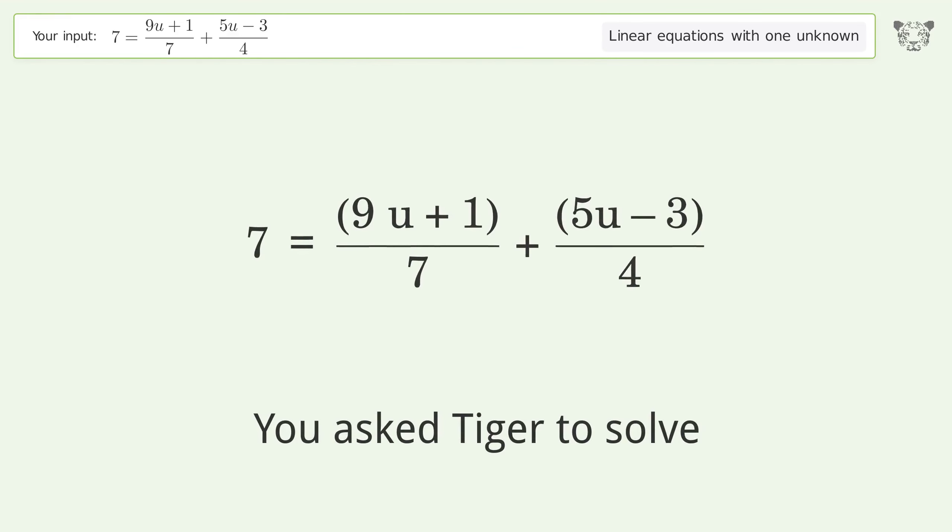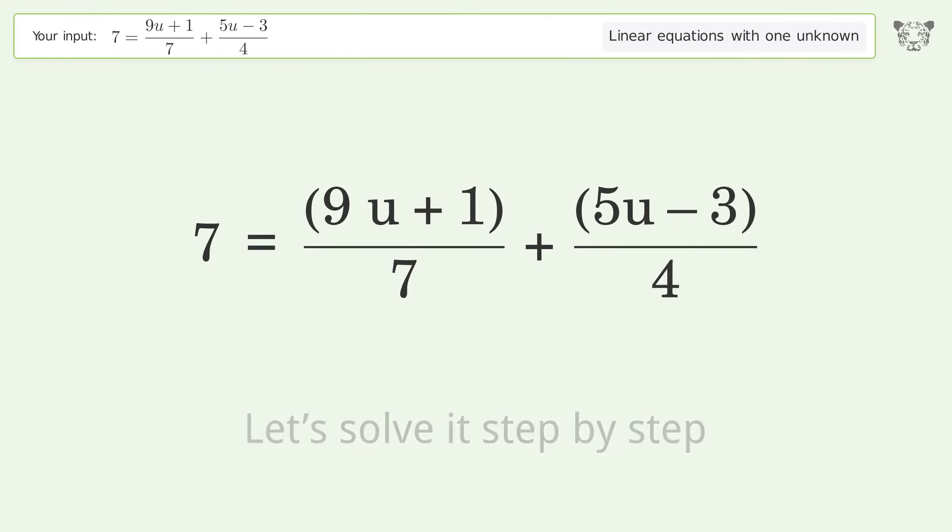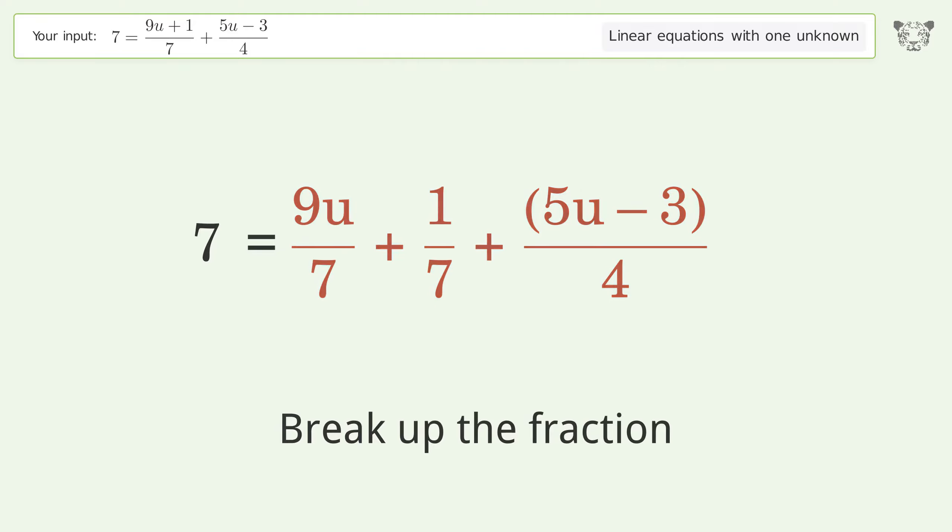You ask Tiger to solve this. This deals with linear equations with one unknown. The final result is u equals 3. Let's solve it step by step. Simplify the expression, break up the fraction, group like terms.